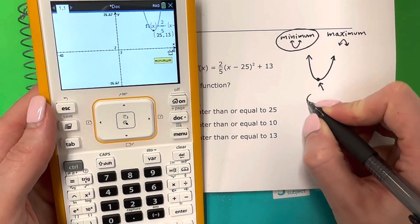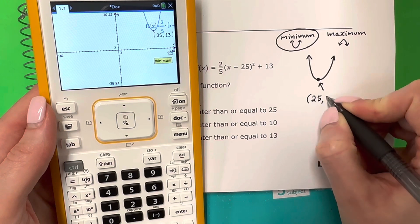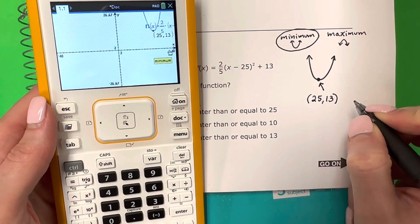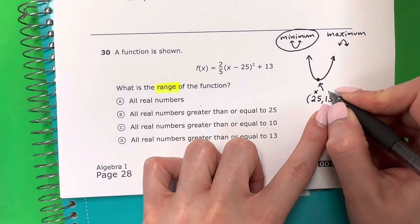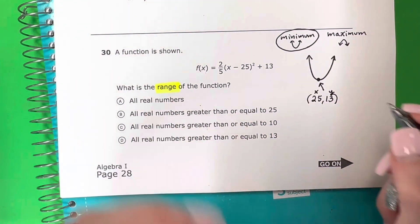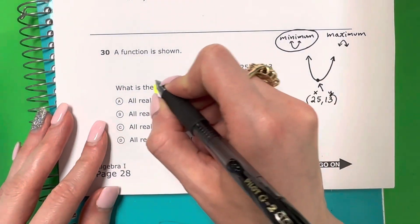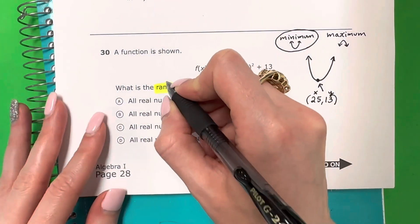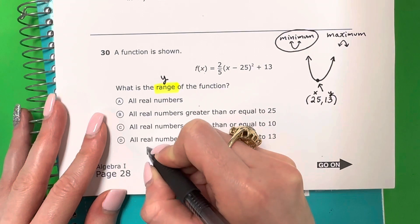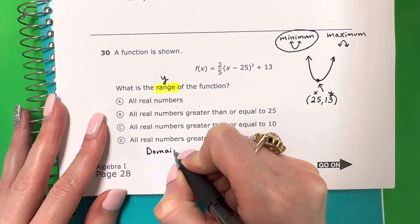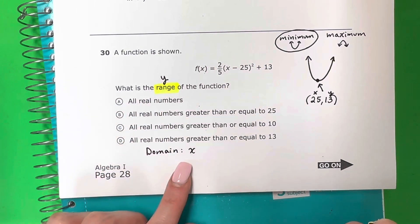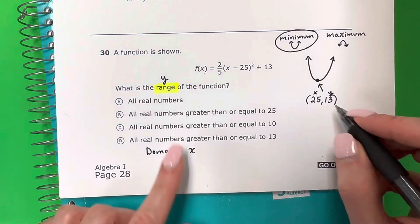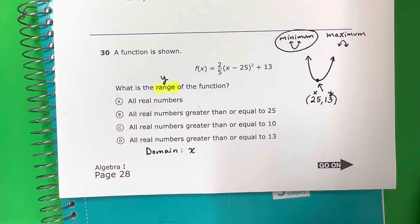It's 25, 13. So this is going to be my X, and this is going to be my Y. So let's talk about range. Range is the list of Y values. So range is Y, and remember domain is X, but I don't want domain. I only want range, so I don't want the X. I'm looking only for the Y, which is the range, so I'm going to be using the number 13.